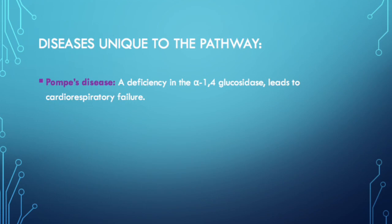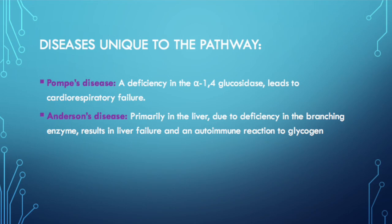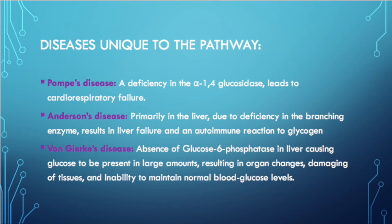Diseases unique to this pathway are glycogen storage diseases. Pompe's disease is caused by a deficiency in alpha-1,4 glucosidase, which can lead to cardiorespiratory failure. Anderson's disease is primarily found in the liver and is due to a deficiency in the branching enzyme, possibly resulting in liver failure and an autoimmune reaction to glycogen. Von Gierke's disease is caused by an absence of glucose-6-phosphatase in the liver, causing glucose to accumulate in large amounts, resulting in organ changes, tissue damage, and the inability to maintain normal blood glucose levels.